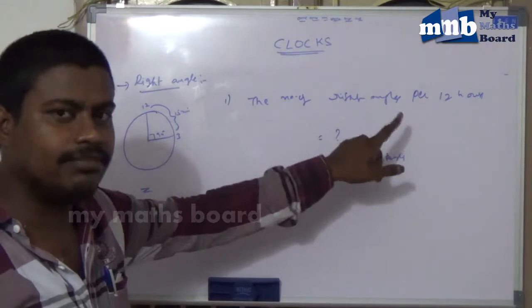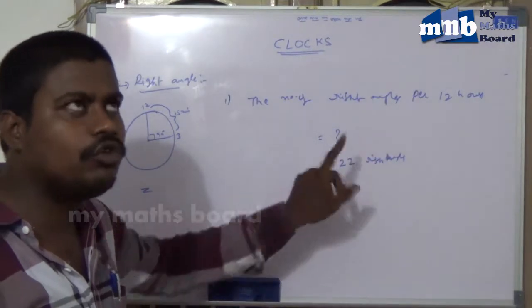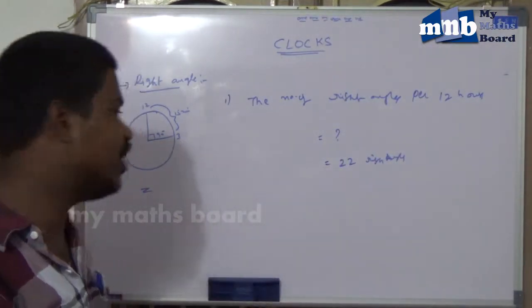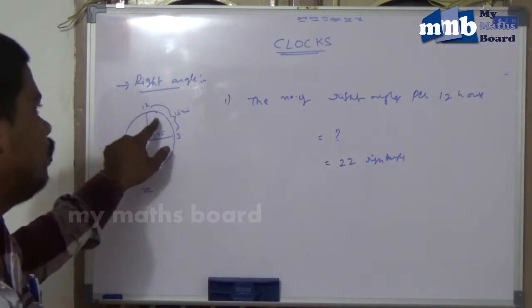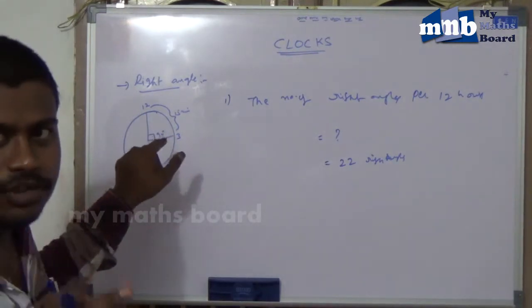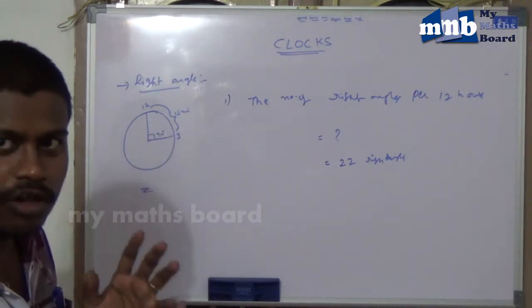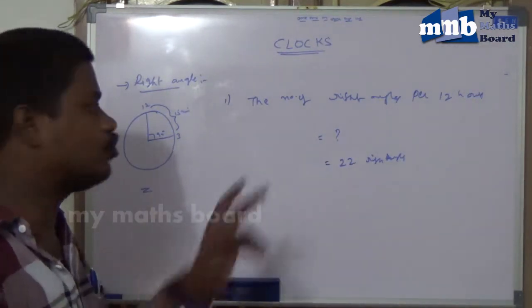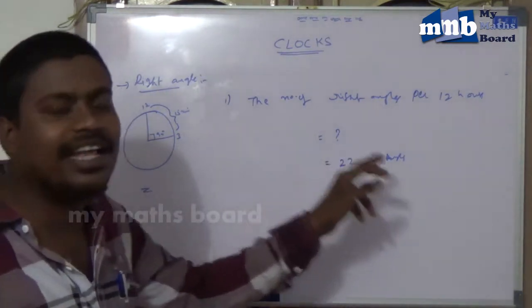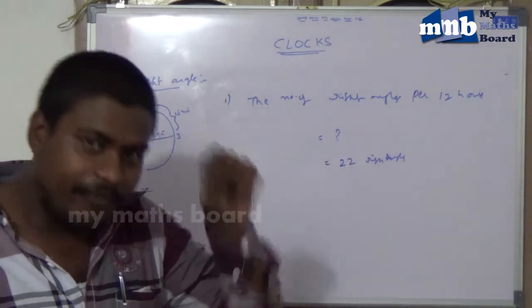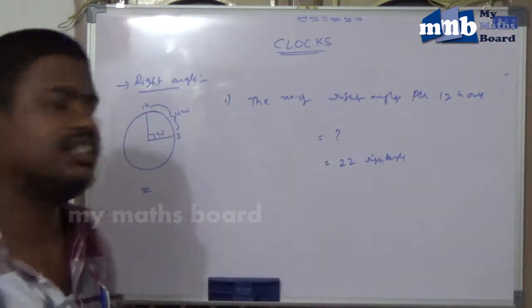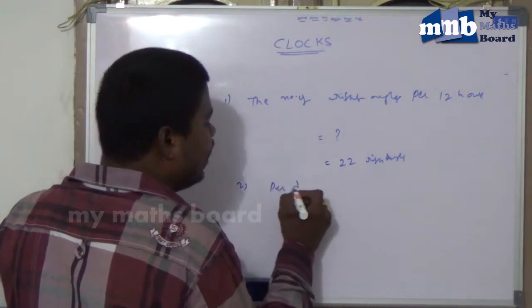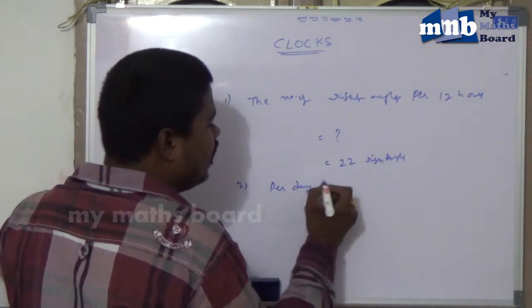Generally people say per hour two times, so 12 hours gives 24 times, but that is not correct. In 12 hours we face two common right angle positions — three o'clock and nine o'clock — which are not countable. So according to our theory, 24 minus 2 equals 22 right angle positions in 12 hours.